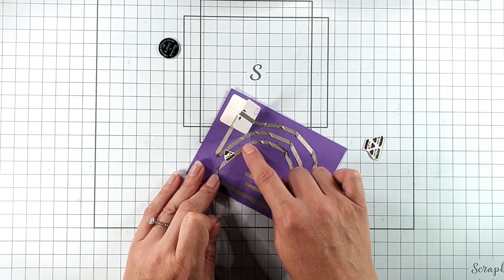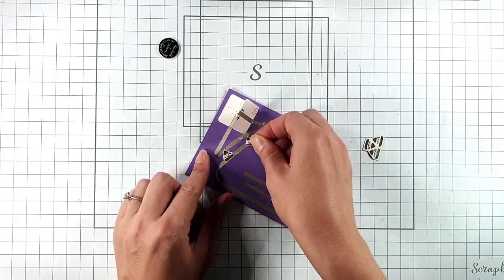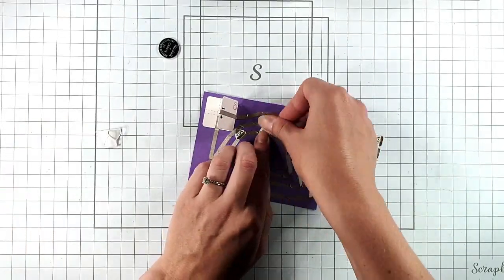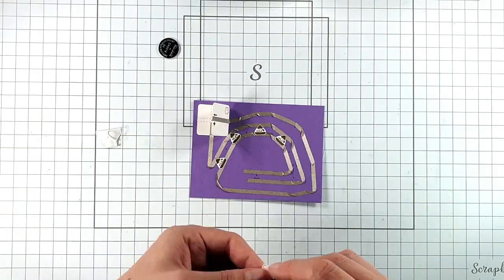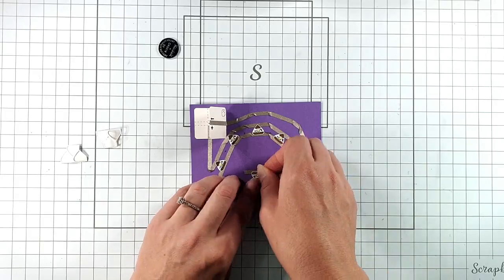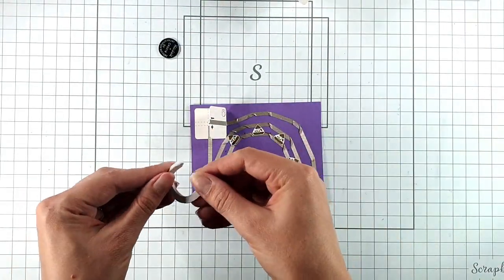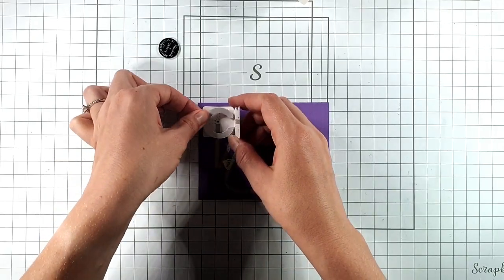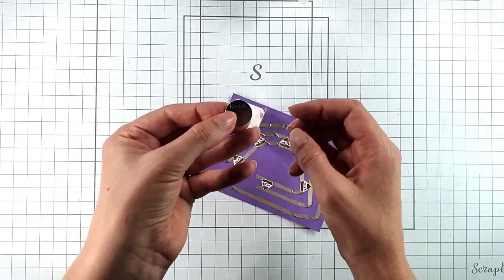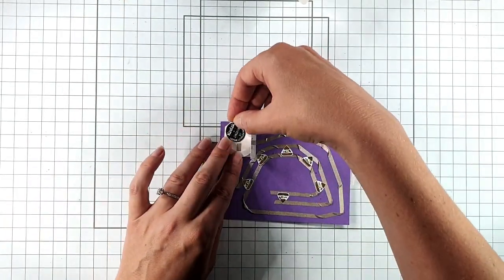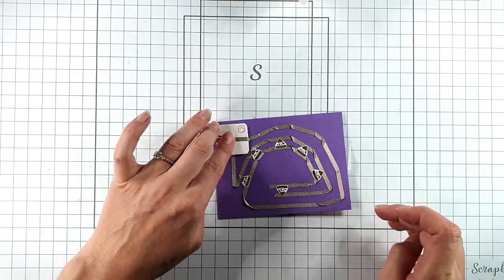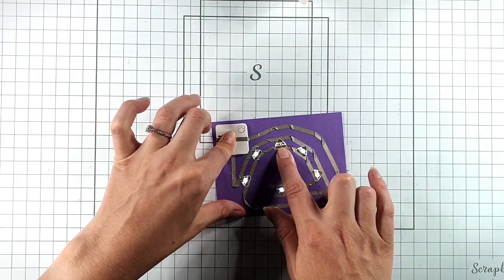We obviously want the pointy negative bit to overlap this side of the tape. So then I'm going to grab one of my battery holders and again, it's self-adhesive. Then I can put my little coin battery into there and then we can test it.